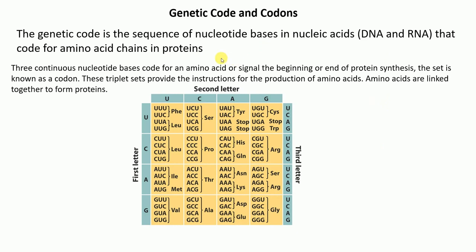Now, having covered the basics of DNA, RNA, and the central dogma, let's talk about genetic code and codons. The genetic code is the sequence of nucleotide bases in a nucleic acid — DNA or RNA — that codes for amino acid chains in a protein.